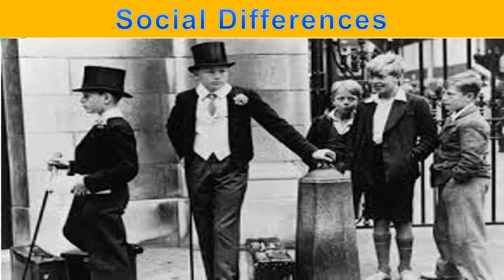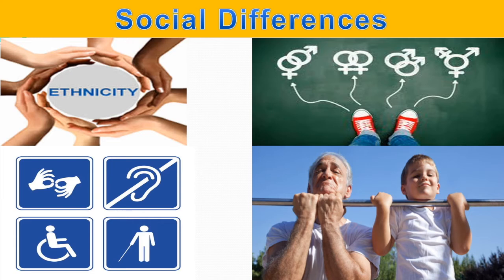Another topic we look at is social differences. One of the main social differences sociologists examine is the difference between social classes — for example, the rich and the poor — and whether this affects your life chances. If you're born poor, does that affect how well you do at school or what type of job you go into? We also look at other differences in society such as ethnicity, gender, disability, and age, and how each of these can affect the quality of our lives.